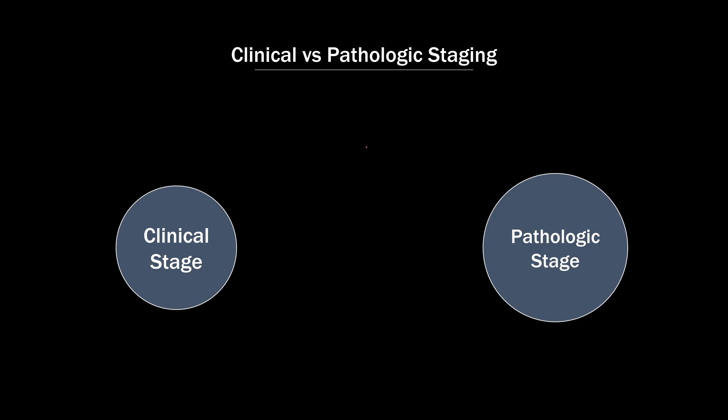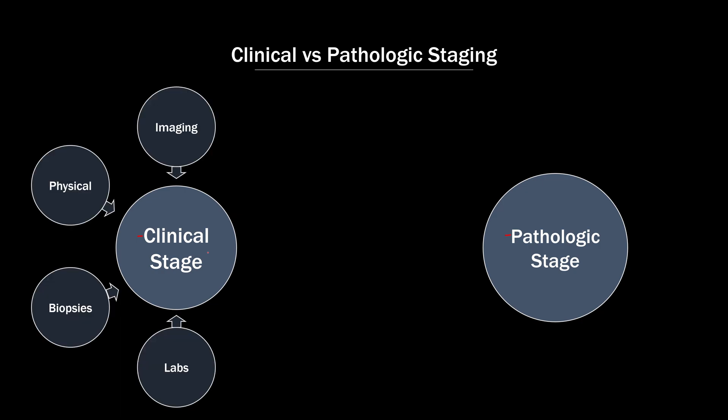When we talk about staging, there are two common types you'll encounter: clinical staging and pathological staging. Clinical staging is based on the collection of all patient data up to the initiation of definitive treatment — it includes the physical exam, lab results, imaging, and biopsy results. If the treatment plan also includes resection of the primary tumor and regional lymph nodes, that information is added to the clinical stage to give us the pathological stage. In some patients whose treatment plan doesn't involve tumor resection, they won't get pathological staging, just clinical staging. The clinical stage and pathologic stage can differ, especially if biopsies hadn't been obtained as part of the clinical stage.